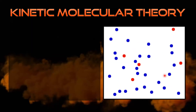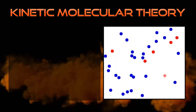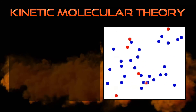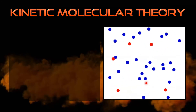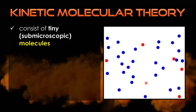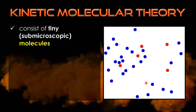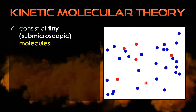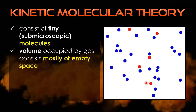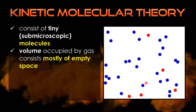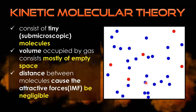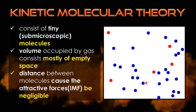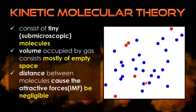Another important concept is the kinetic molecular theory, which is best illustrated by the graphics on the slide. Kinetic molecular theory has important implications that ground many properties and behaviors of gases. The first is that gases consist of tiny, submicroscopic molecules and the volume occupied by gases consists mostly of empty space. Additionally, the distance between molecules causes attractive forces or intermolecular forces to be negligible. These things explain why gases do not have definite shape and volume.